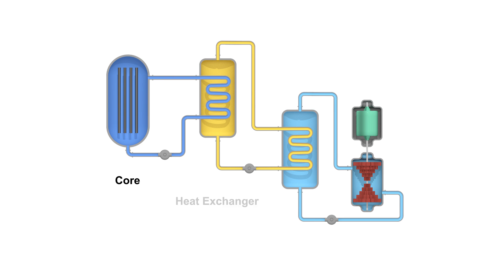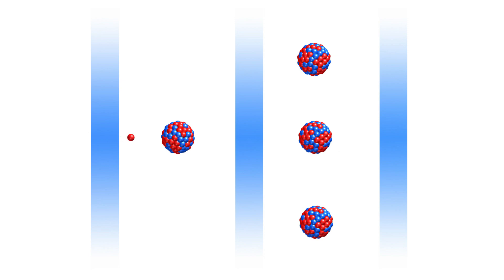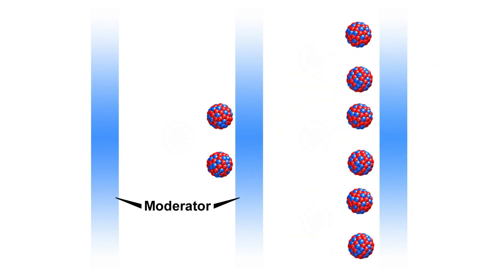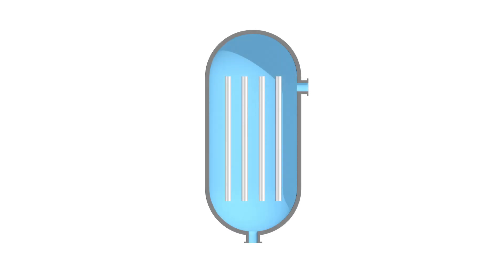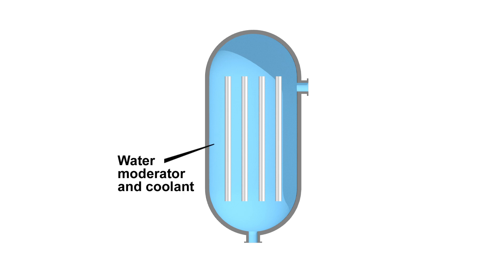Nuclear power plants generate electricity through a fissile chain reaction. Fissionable isotopes like uranium-235, uranium-233, or plutonium-239 absorb a neutron and then fission — that is, split apart — into fission products. In that process they generate heat, and they eject more neutrons to continue the chain reaction. A moderator is usually employed to slow down the neutrons so they are more likely to cause another fission when they impact the fuel.